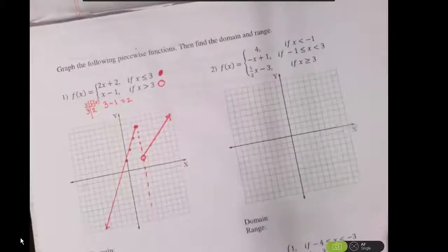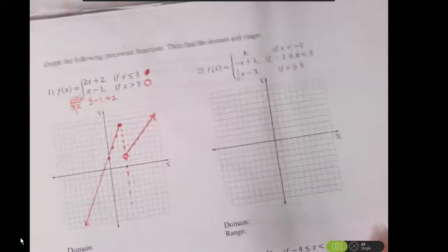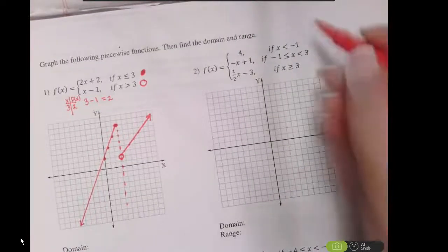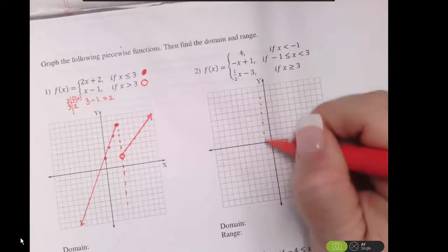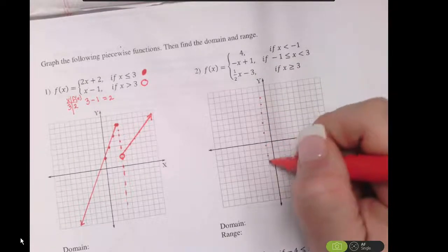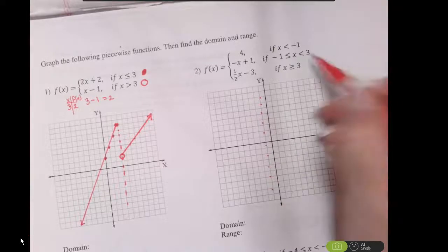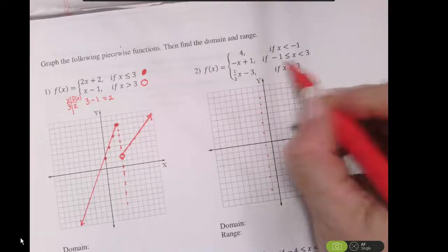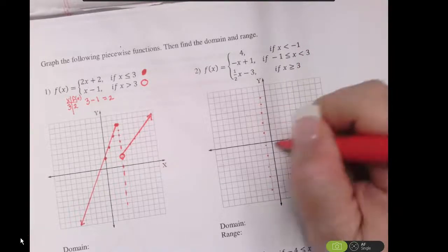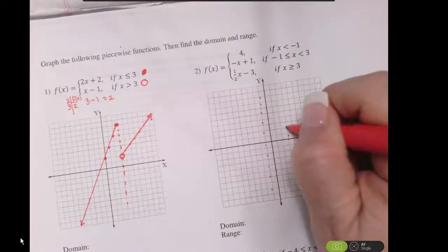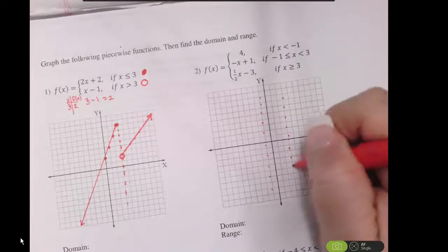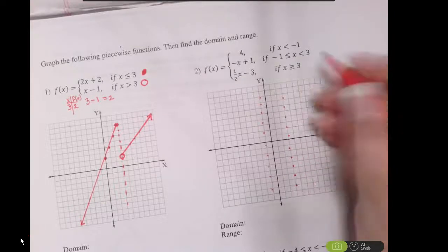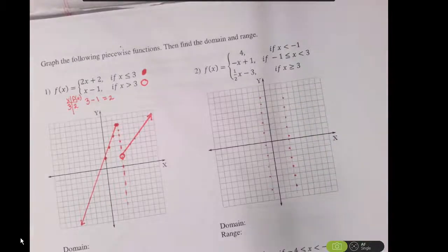For number 2, I'm going to complete this in much the same way. I'm going to create a boundary line at x equals negative 1, just very lightly. And then between negative 1 and 3, I have another boundary. And anything greater than 3, I've already got the boundary line drawn for that.